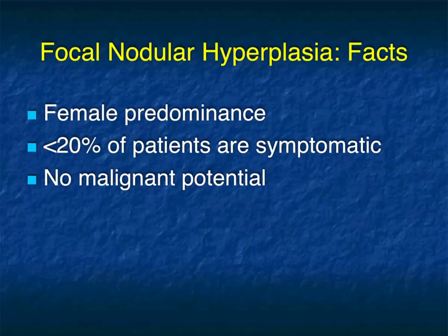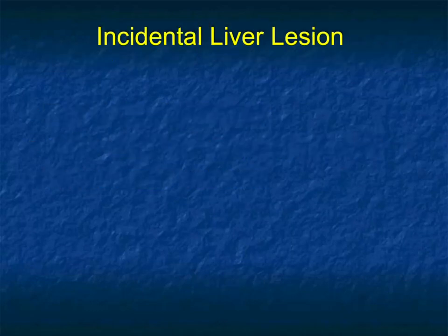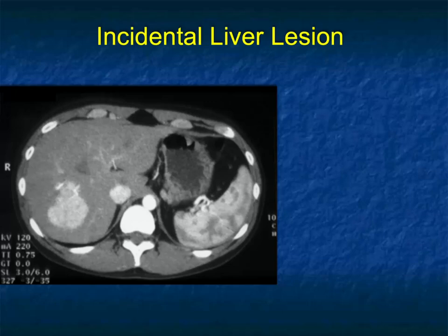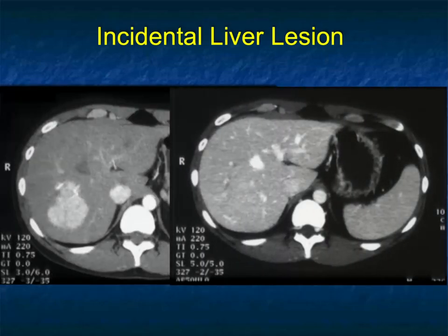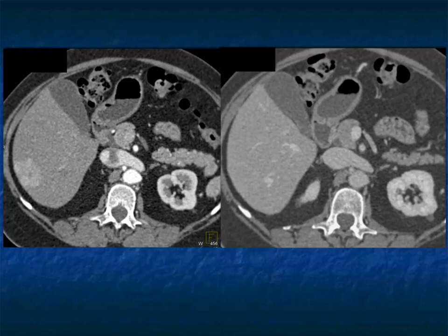FNH is a benign lesion — there's no malignant potential and no chance of spontaneous bleeding. The majority are asymptomatic, which makes it a bit of a challenge. We talk about an incidental lesion: on arterial phase imaging there's a vascular lesion in the right lobe of the liver. Could this be a hemangioma? It doesn't quite look like that — it's not peripheral enhancement. Could this be metastasis or hepatoma? Those are definite possibilities, but the lesion becomes totally isodense on venous phase imaging. Hepatomas and vascular mets can become isodense, though usually not that quickly.